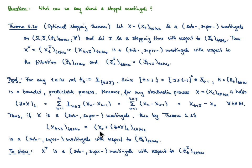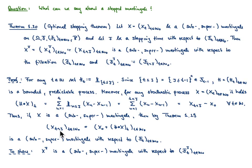If we consider the conditional expectation of X_0 given any F_t, since X_0 is F_0-measurable and F_0 ⊆ F_t, we can use the measurable factor property to take X_0 out, which shows X_0 is itself a martingale. The sum of two martingales is also a martingale. Hence we obtain that the stopped process is a martingale with respect to the filtration F_t.